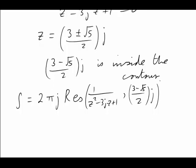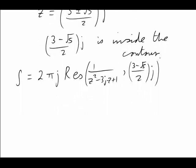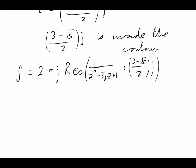The arithmetic is a little bit messy, but basically it's a straightforward calculation. It's a simple pole, so all we need to do is take 2πj times the limit as z approaches the pole, (3 - √5)/2 × j, of the function z minus that value on top.